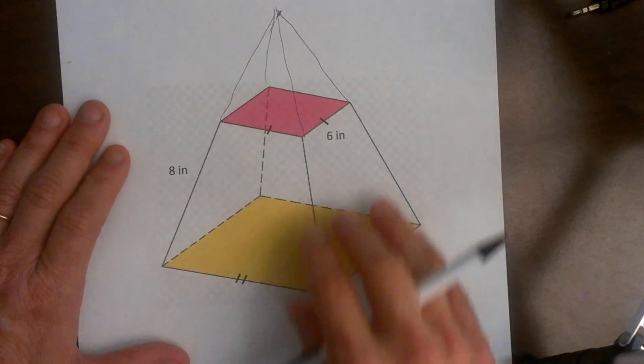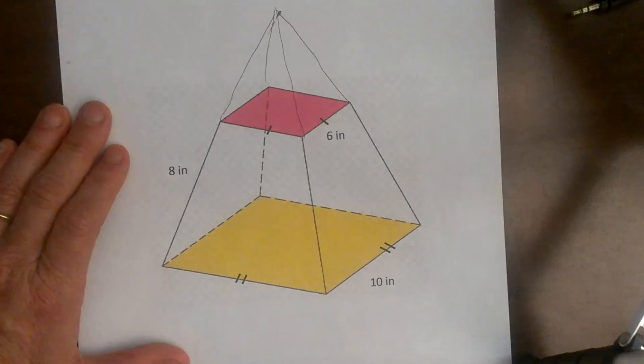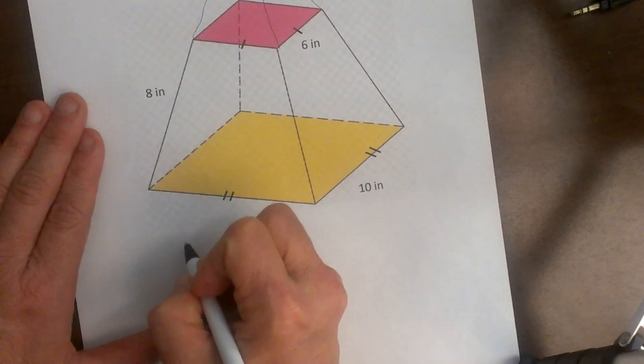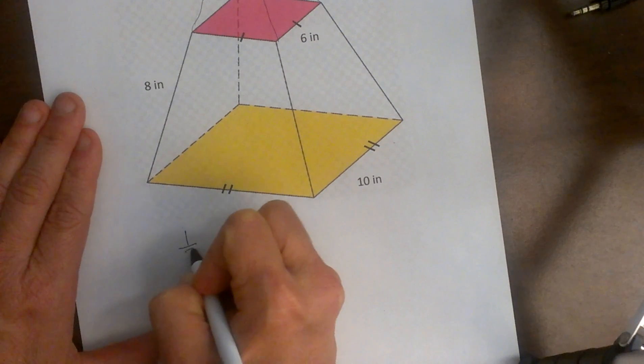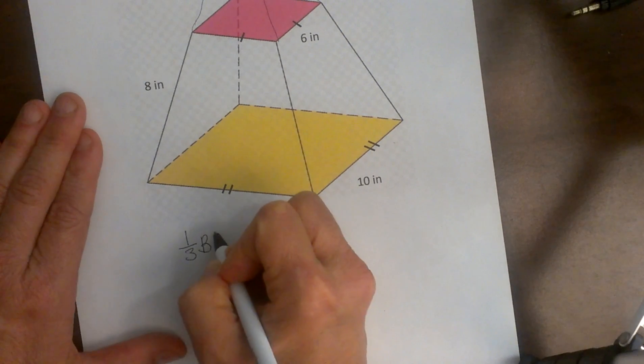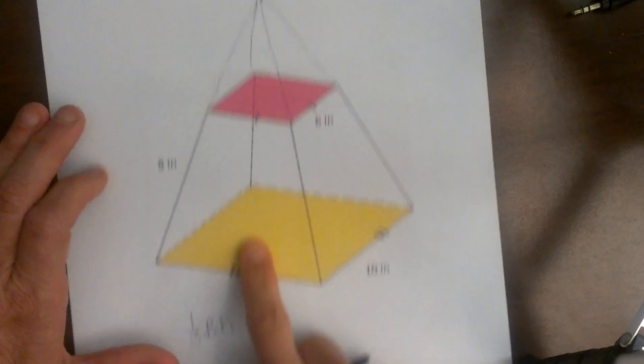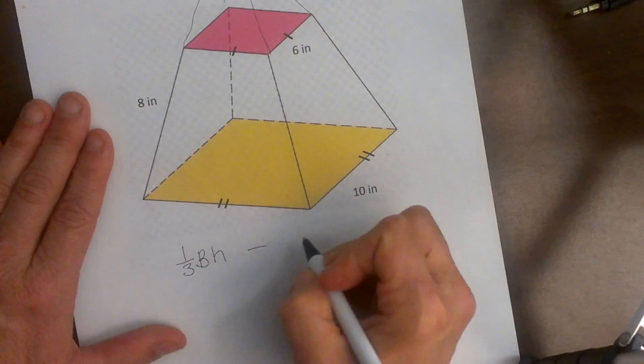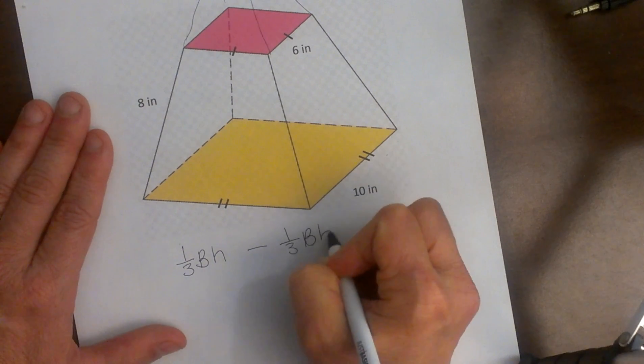So the general idea here is we are going to take the volume of this entire pyramid and we are going to subtract off the part that we chopped off. So let's go back and think about our volume formulas. So the volume of a pyramid is one third base area times height and that would be of the full pyramid. Then I am going to subtract the volume that I have cut off. So I am going to subtract a small pyramid which is one third base area times height.